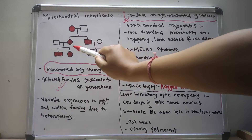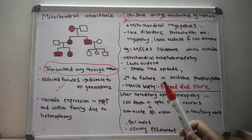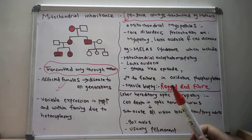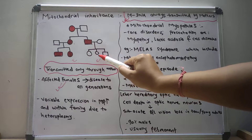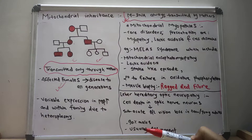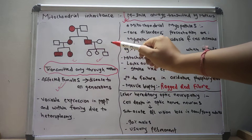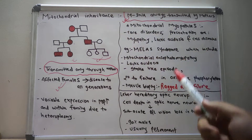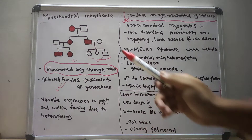When the affected female marries a non-affected male, and the affected male marries a non-affected female, they will have their respective progenies. As we can see in this pedigree chart, the progeny from the affected mother are all affected, but the progeny from the affected father are not affected, because mitochondrial DNA is always transmitted through mothers only.